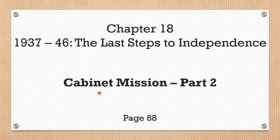So let's take a quick overview of the previous lecture. The Cabinet Mission was carried out in 1946. It was a last attempt from the British side. They were sent to India to deal with the issue, and they had a few proposals. According to your book, three proposals were discussed. One was that a union would be formed comprising the provinces and princely states.